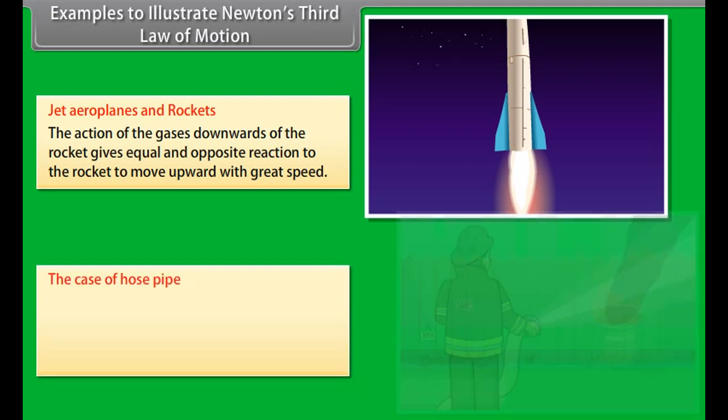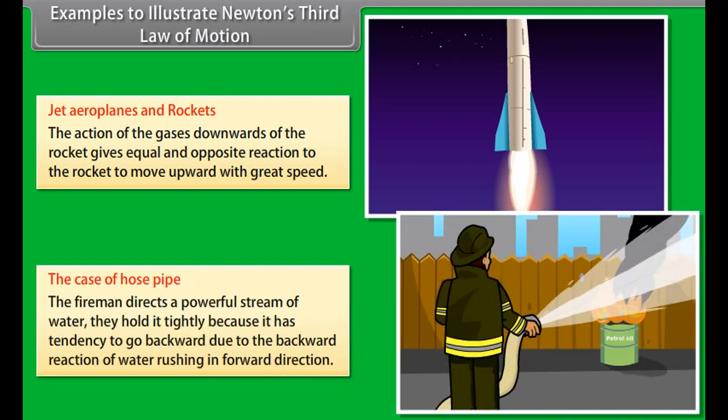Examples to illustrate Newton's third law of motion. How do we walk? When we walk on the ground, our foot pushes the ground backward and in return, the ground pushes our foot forward.